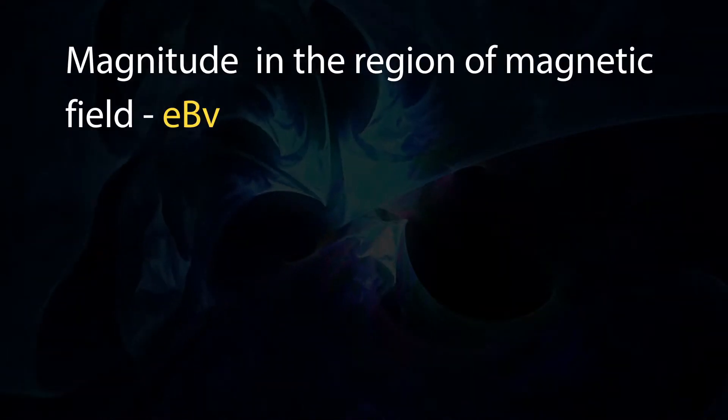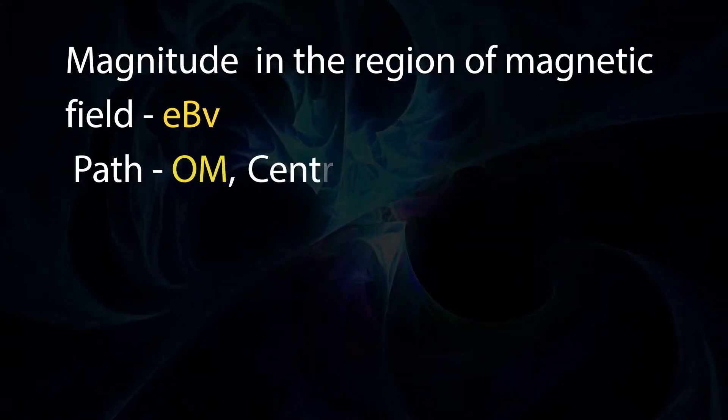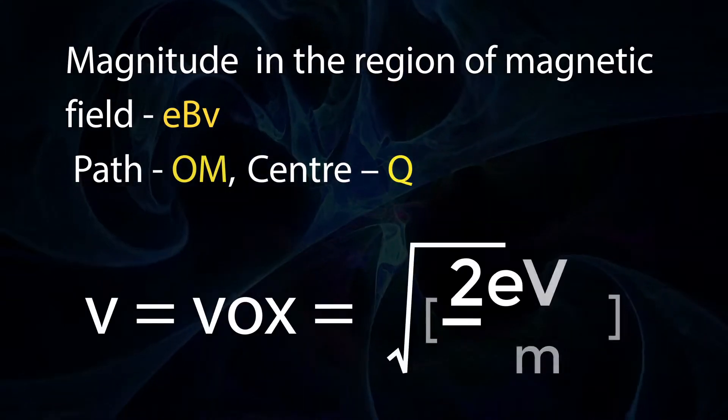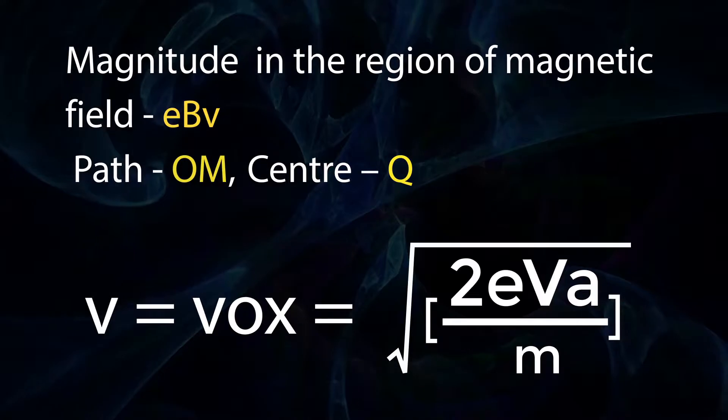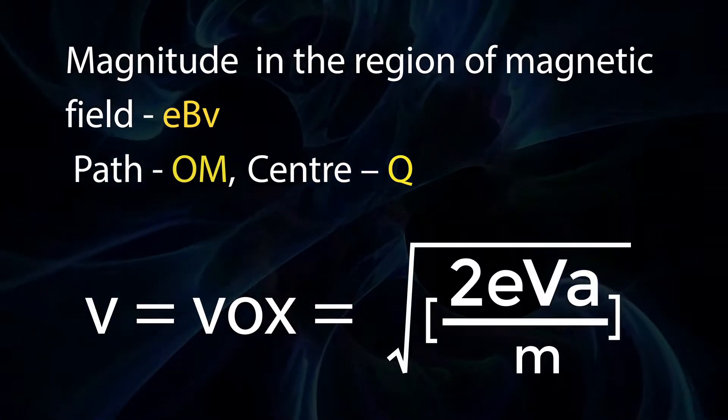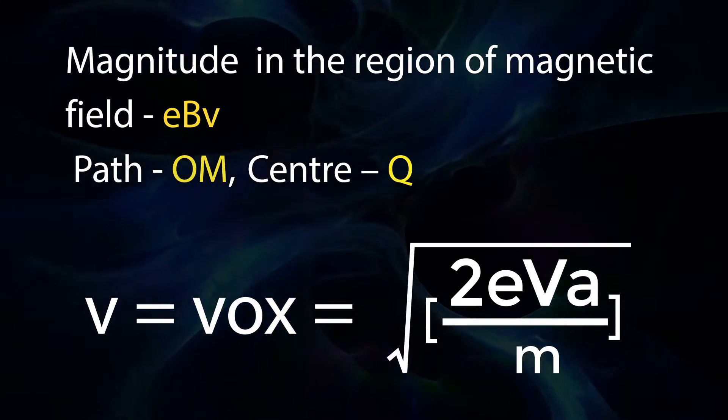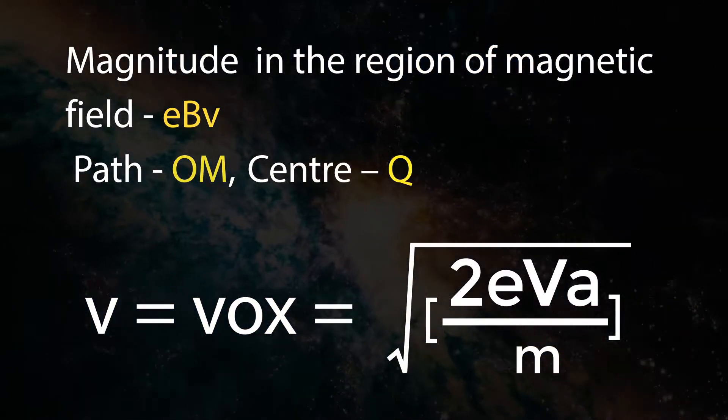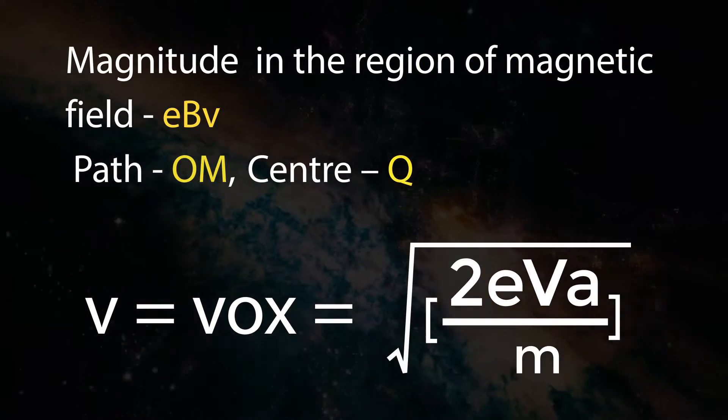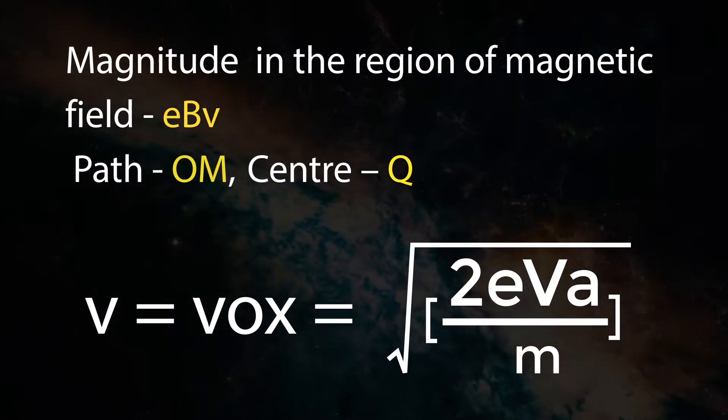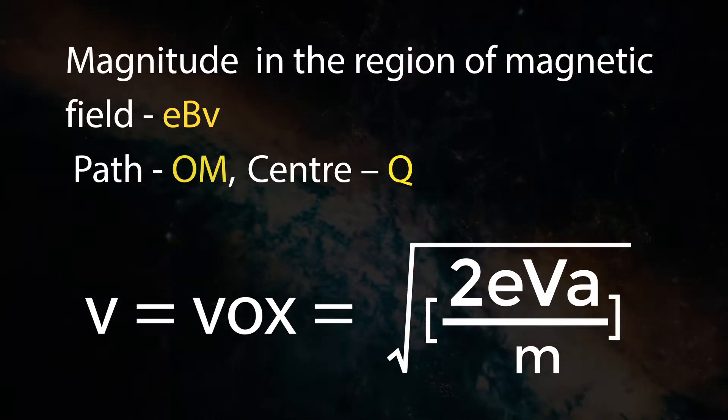The emerging electron beam experiences a force of magnitude eBV in the region of the magnetic field. The path OM will be an arc of a circle where center is at Q. The speed of the electrons will remain constant and equal to V = V0 = root of 2eVA by m.